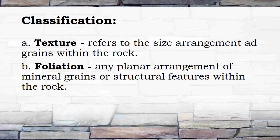Classification of metamorphic rocks. A. Texture — refers to the size and arrangement of grains within the rock. B. Foliation — any planar arrangement of mineral grains or structural features within the rock.